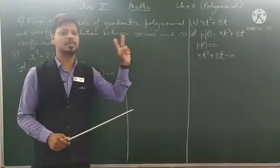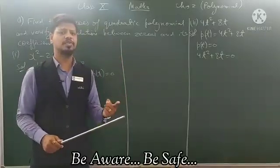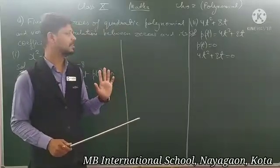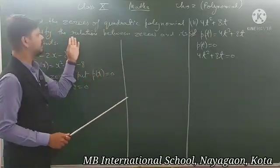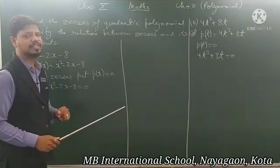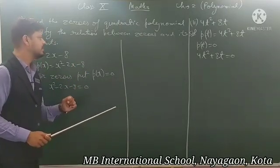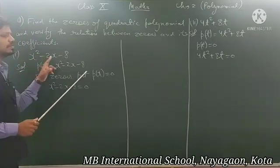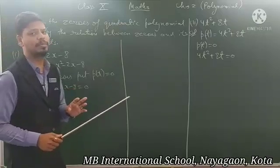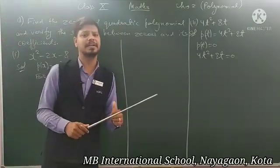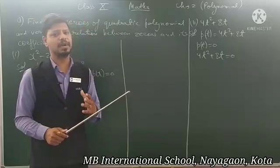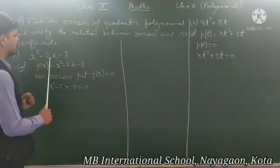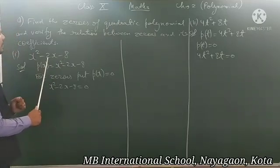So this question has two parts. First, you have to find the zeros of the quadratic polynomial by factorization or middle term splitting method, and after that find the relationship between zeros and its coefficients. The polynomial given is x² - 2x - 8.